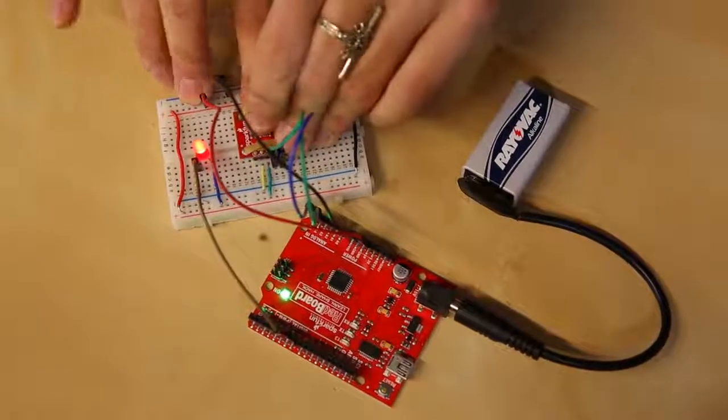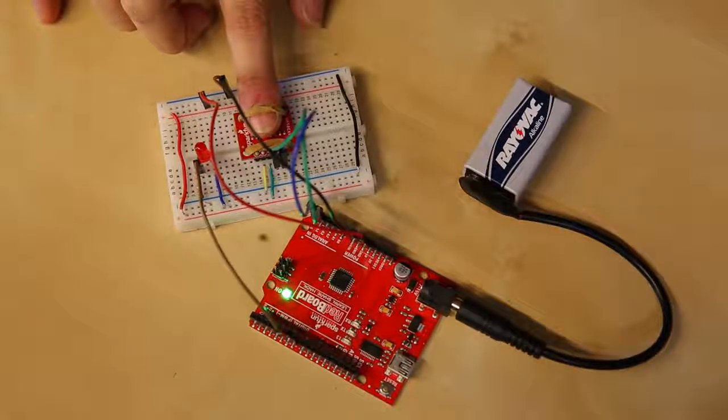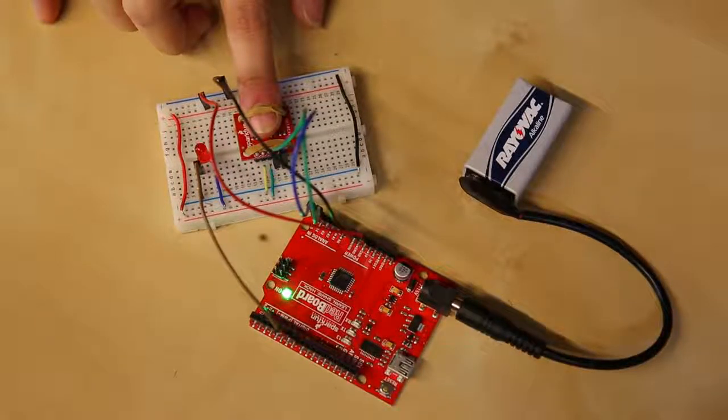In this example, I'm using a rubber band to keep the MAX3105 flush against my finger pad. The sensor is reading and mapping my pulse, while the red LED is blinking to its rhythm.